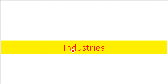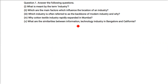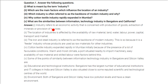Question and answer on industries. What is meant by the term industry? Industry means an economic activity that is concerned with production of goods, extraction of minerals, and provision of services.